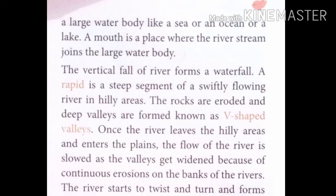The vertical fall of a river forms a waterfall. A rapid is a steep segment of a swiftly flowing river. In hilly areas, the rocks are eroded and deep valleys are formed, known as V-shaped valleys. Once the rivers leave the hilly areas and come down to plain areas, the flow of river becomes slow. Due to continuous erosion on the banks of the river by wind, river, and sea waves,